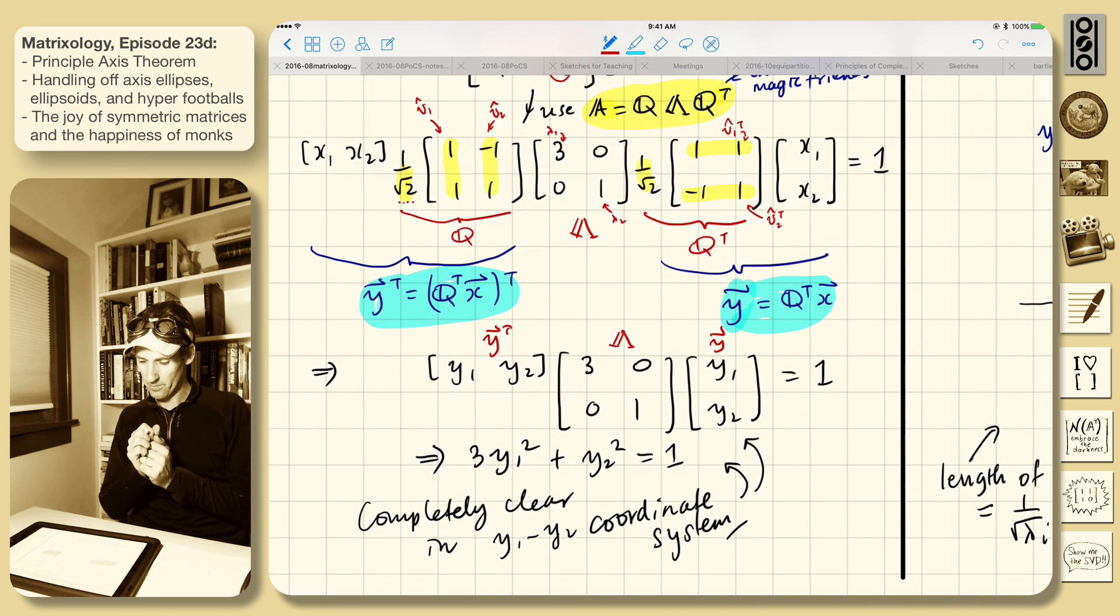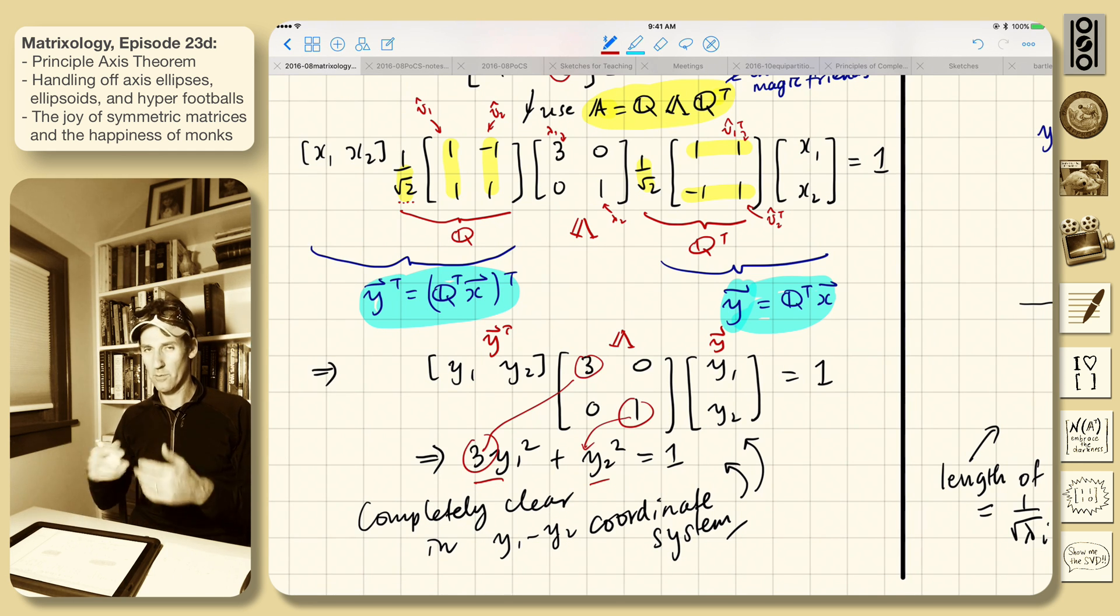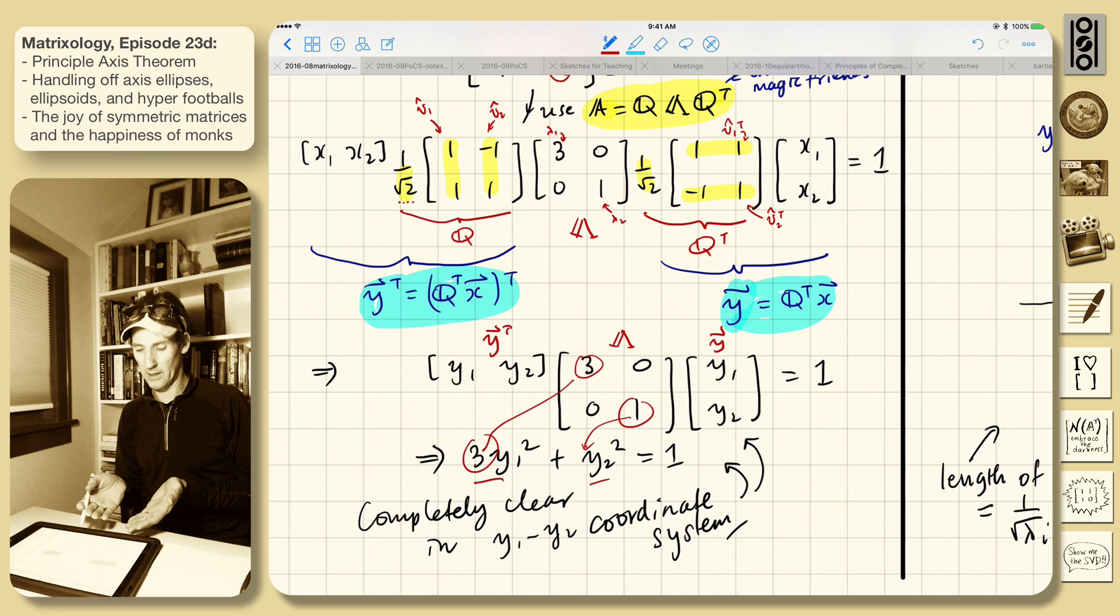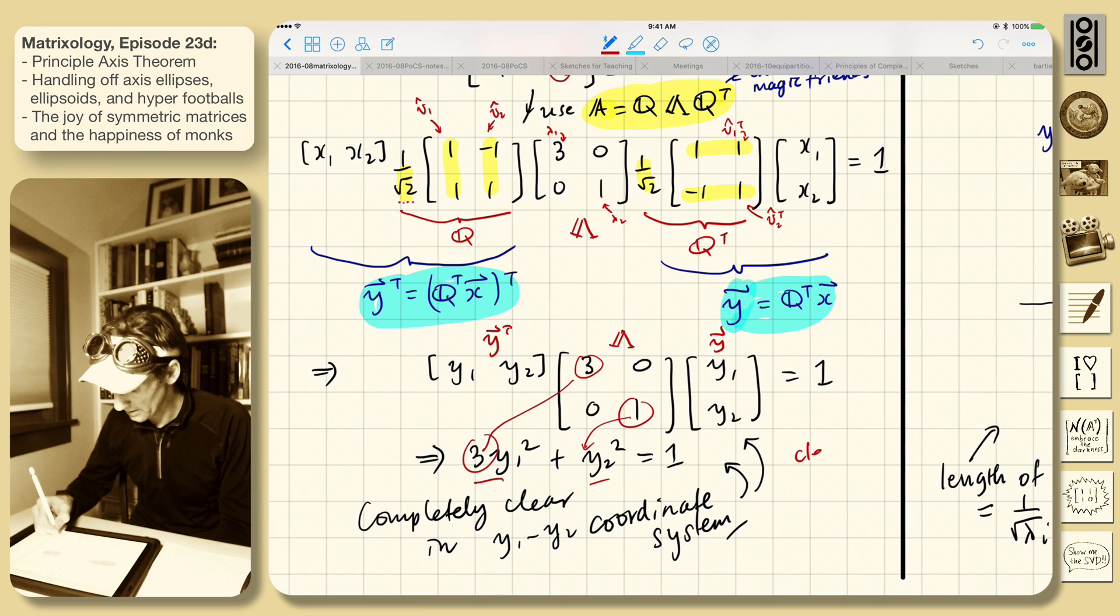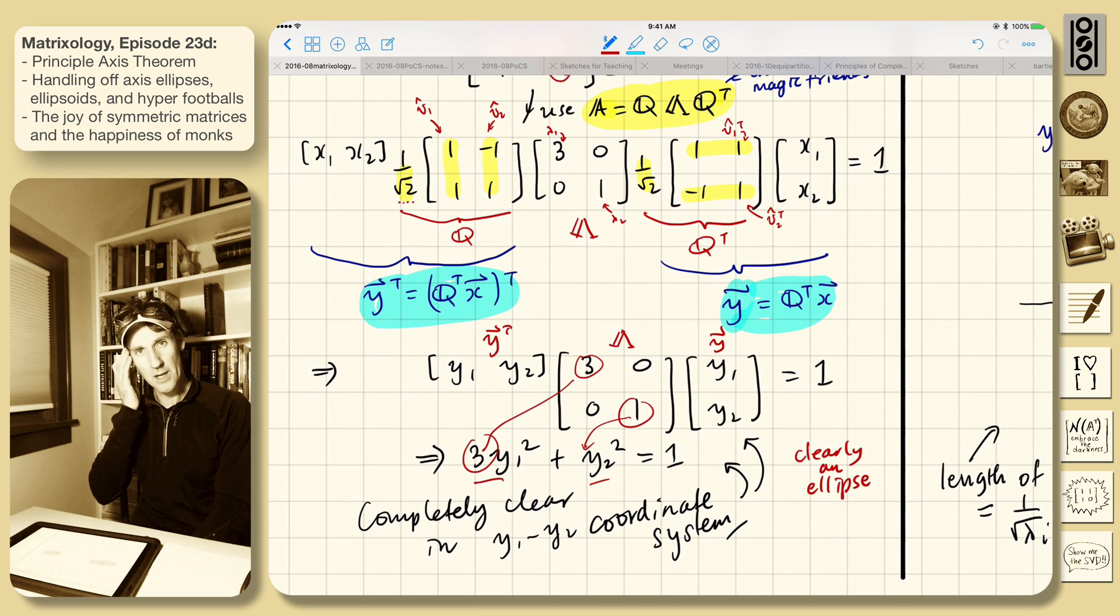So y, this is y transpose. Lambda is still the same thing. And y. So now we have a very simple little form here. And we can just multiply through. So we'll get 3 times y1 squared plus y2 squared equals 1. Right? So there's the 3. It's here. The 1 goes here. Y2 squared equals 1. So this is a very simple, this is clearly an ellipse. Right? This is the standard form for an ellipse.